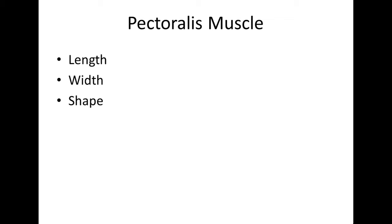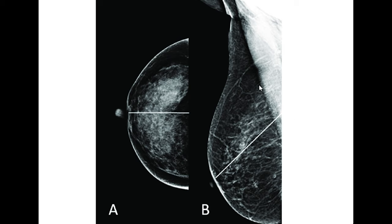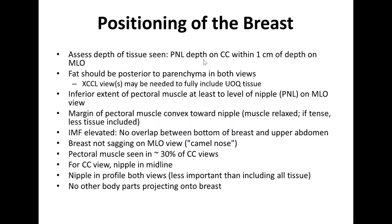Regarding the pectoralis muscle, we consider its length, width, and shape. In ideal mammographic images, the pectoralis muscle should reach at least up to the posterior nipple line. If it does not reach the posterior nipple line, we are missing some part of the breast and the image is inadequate. The outer border of the pectoralis muscle should be convex or straight, not concave. The posterior nipple line depth on the cranio-caudal image and on the MLO image should differ by no more than one centimeter.